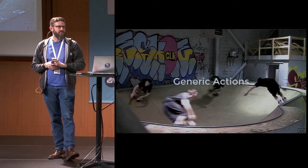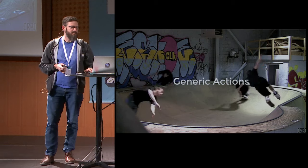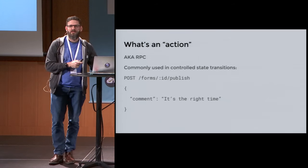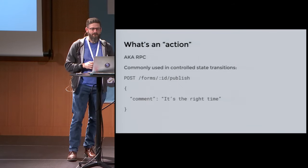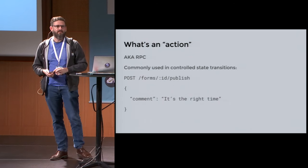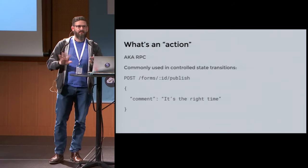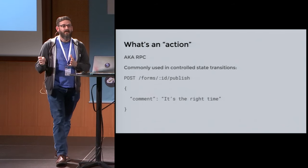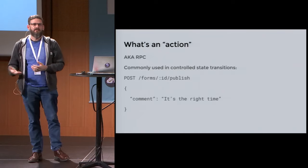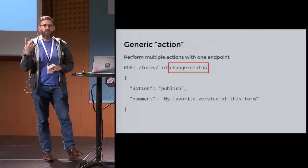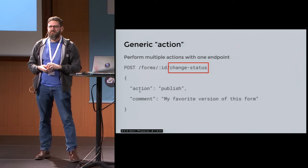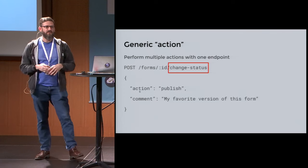Our final topic is generic actions. An action, in my terminology, is really just an RPC call — it doesn't fit your CRUD pattern. For example, 'forms/{id}/publish' is an action. These are typically state transitions with some additional control — like in the payments world, when you cancel a payment you might have to give a reason. Any time you have a reason or description with a state transition, you tend to fall into these action patterns. But what everyone wants to do is come up with one endpoint and pass in the action type as a field — one thing that can do all these state transitions.